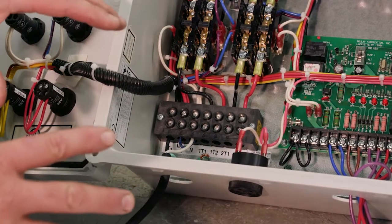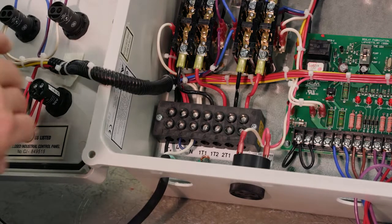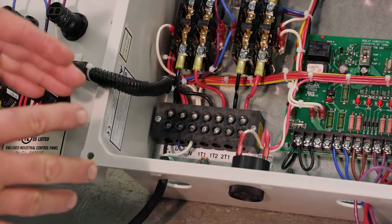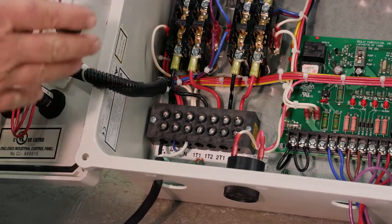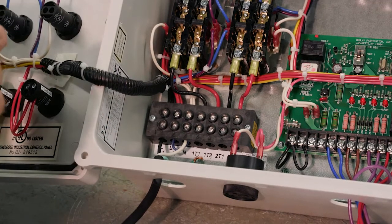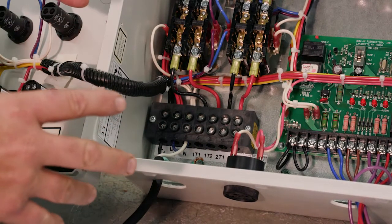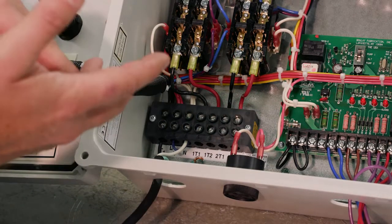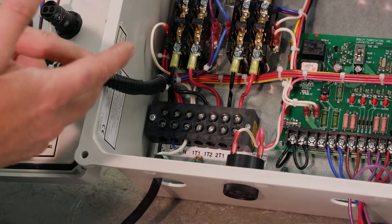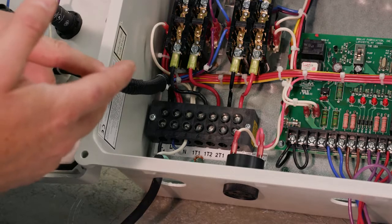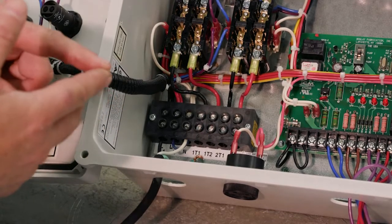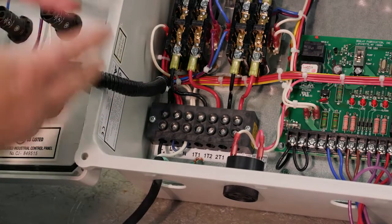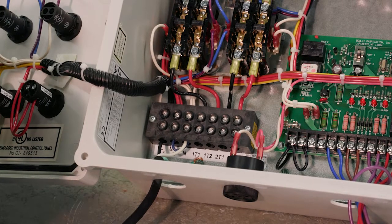So if our panel isn't working, it could be because we don't have a neutral, whether that's with 115 and we didn't put a jumper in or with 230. Because with 230, if you just have two hots and a ground, then it's not going to work because we need two hots, a neutral, and a ground. So this panel has to have a neutral.